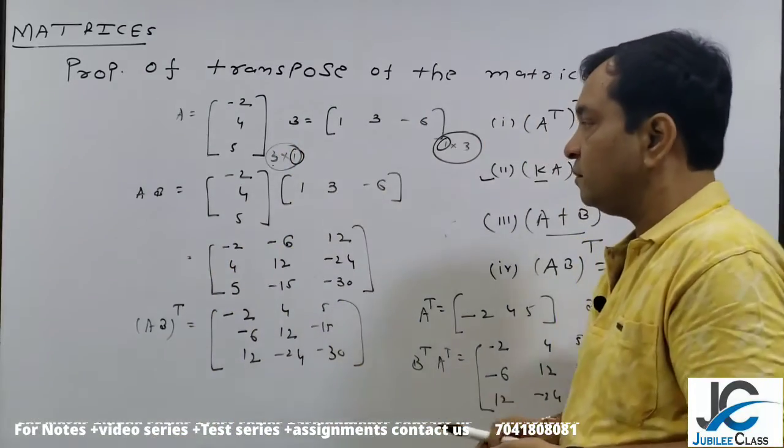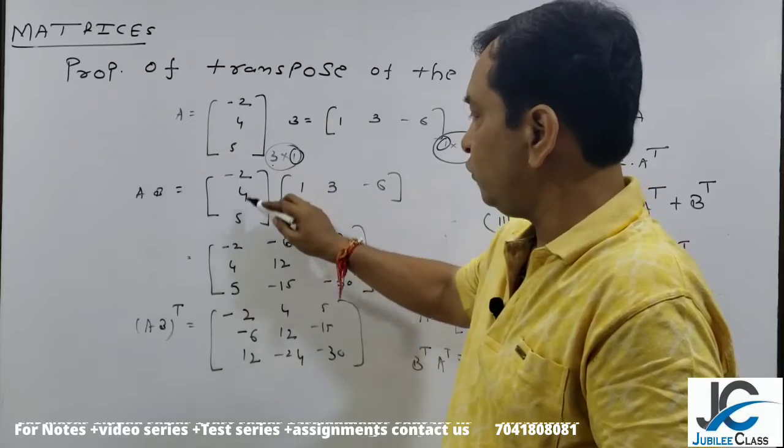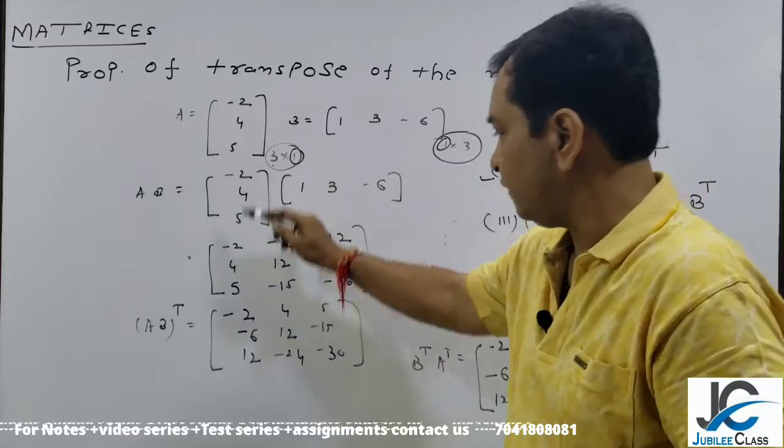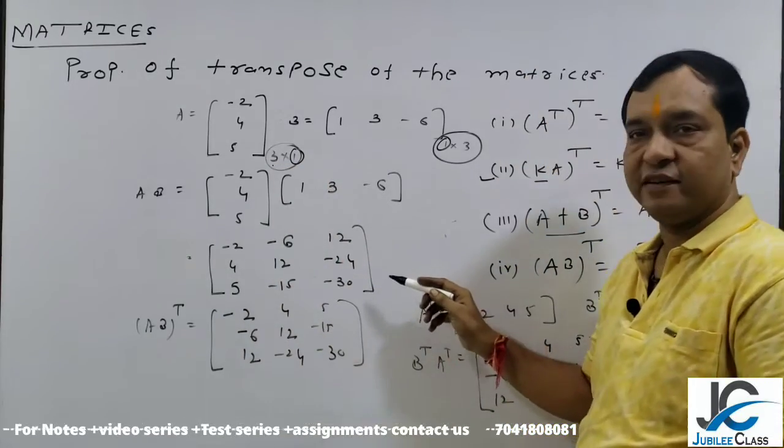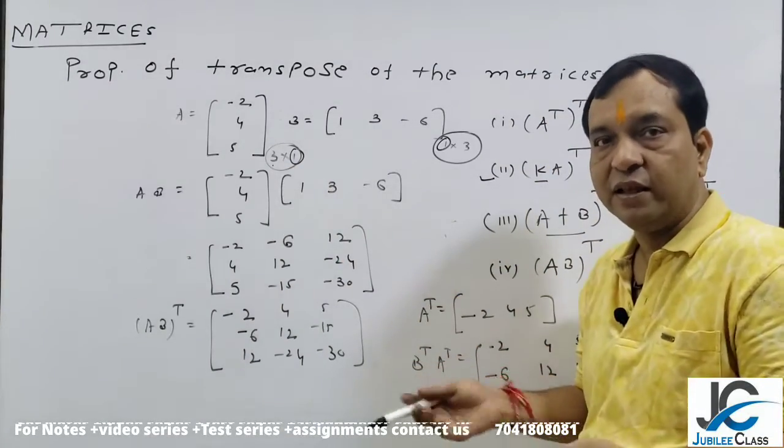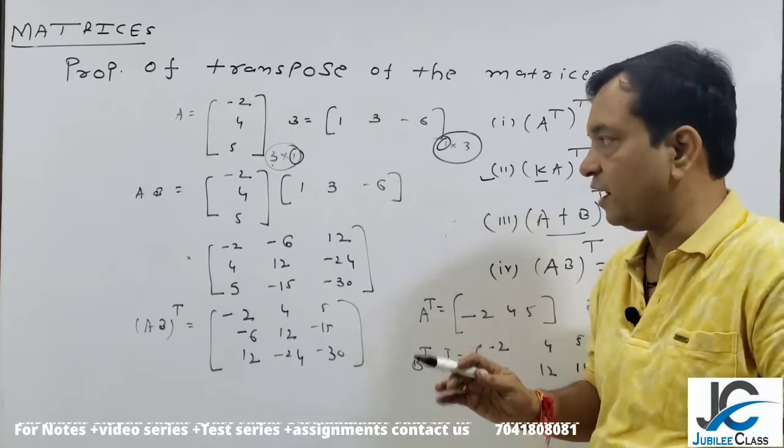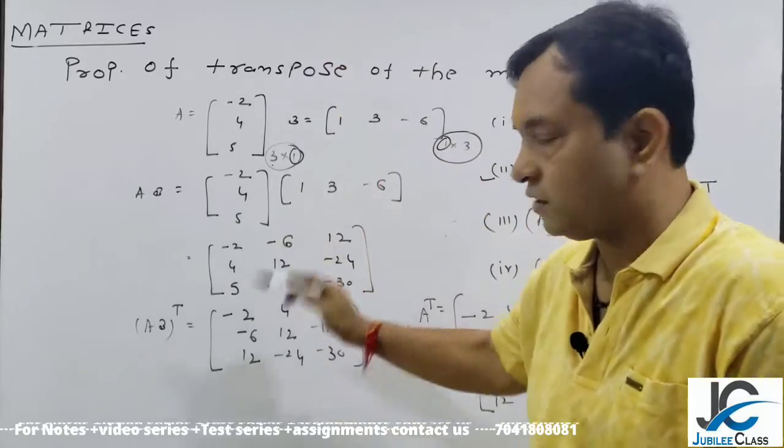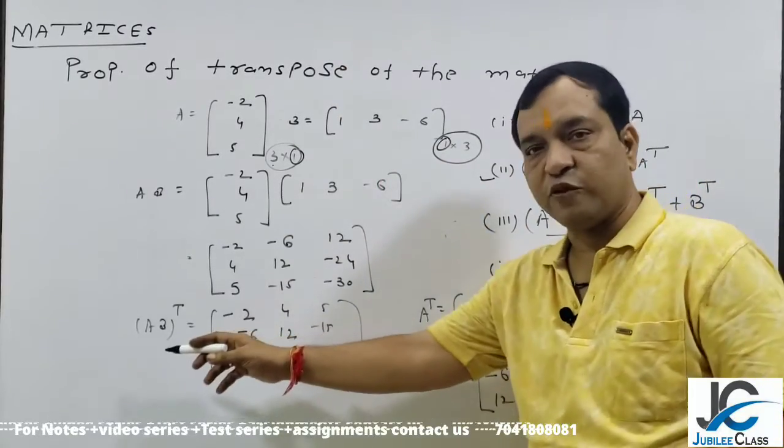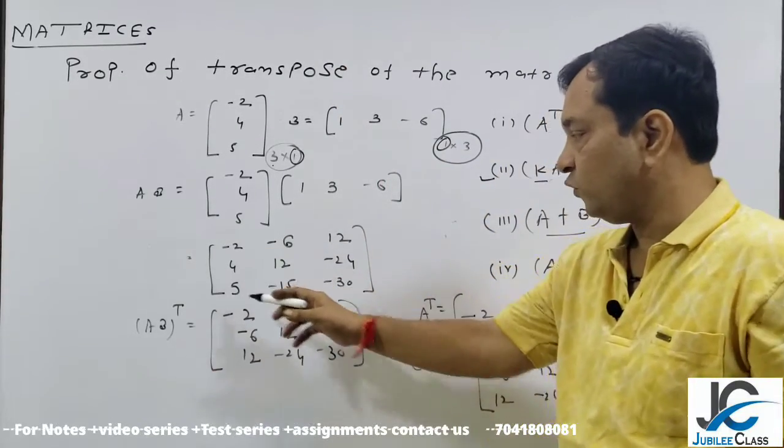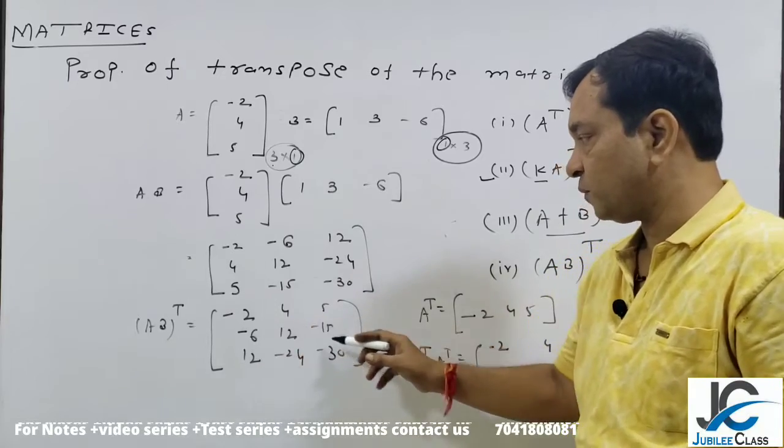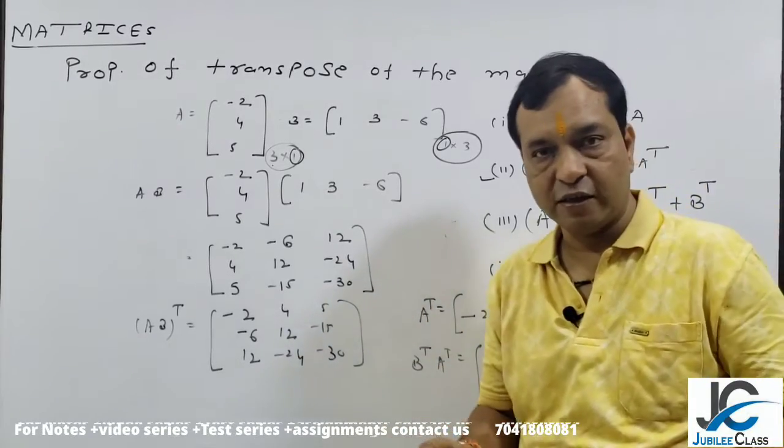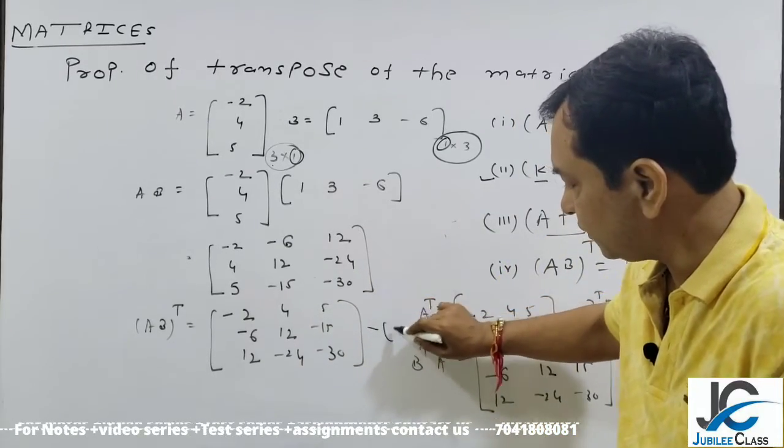Next, the result is 3 cross 3. When we multiply, then the result comes in 3 cross 3 form. Simple multiplication: 1 with this, 3 with this, and -6 with this. Then it is the result. Now, the transpose of this: [-2, 4, 5; -6, 12, -15; and this one]. So AB transpose is done. Result number 1.